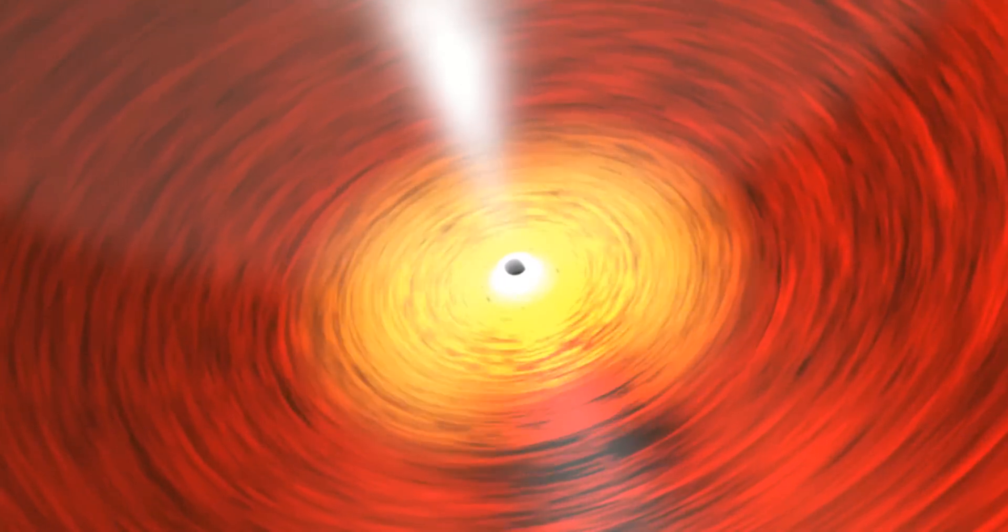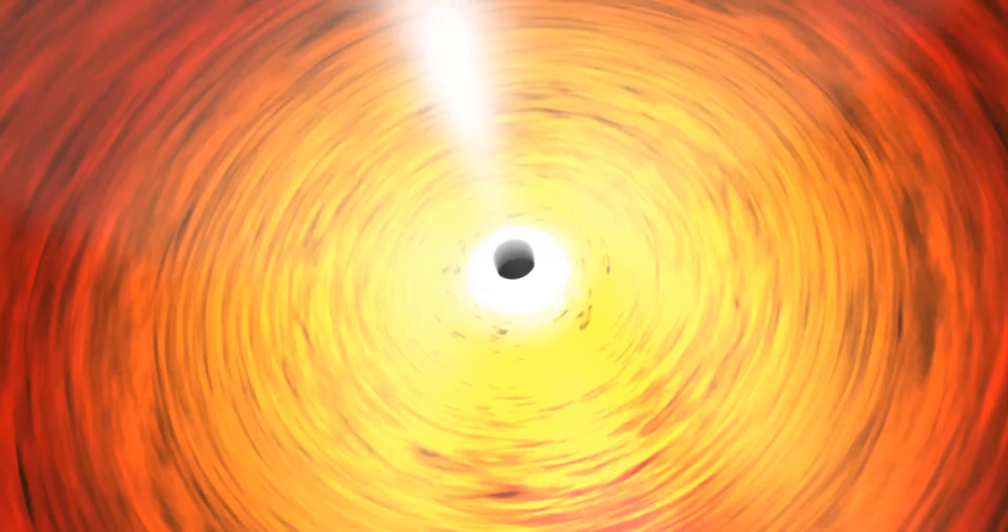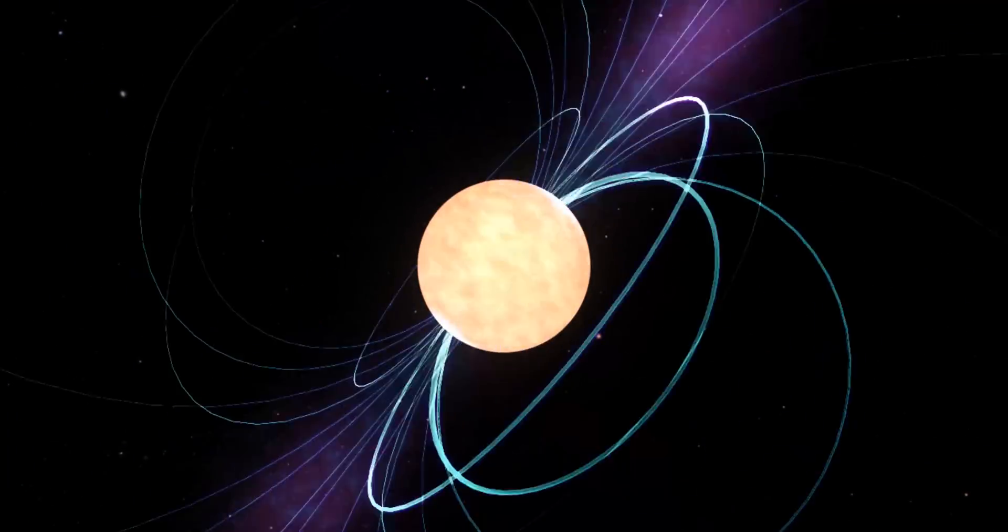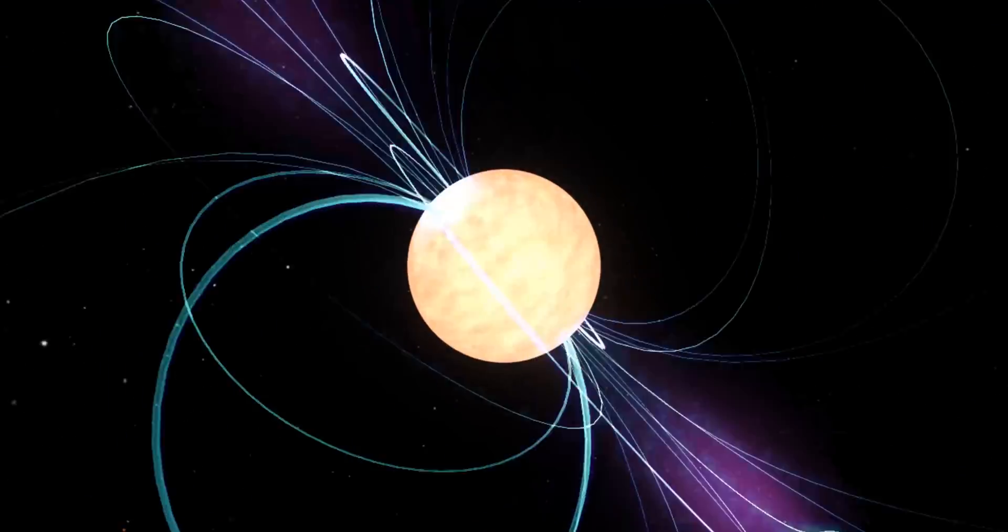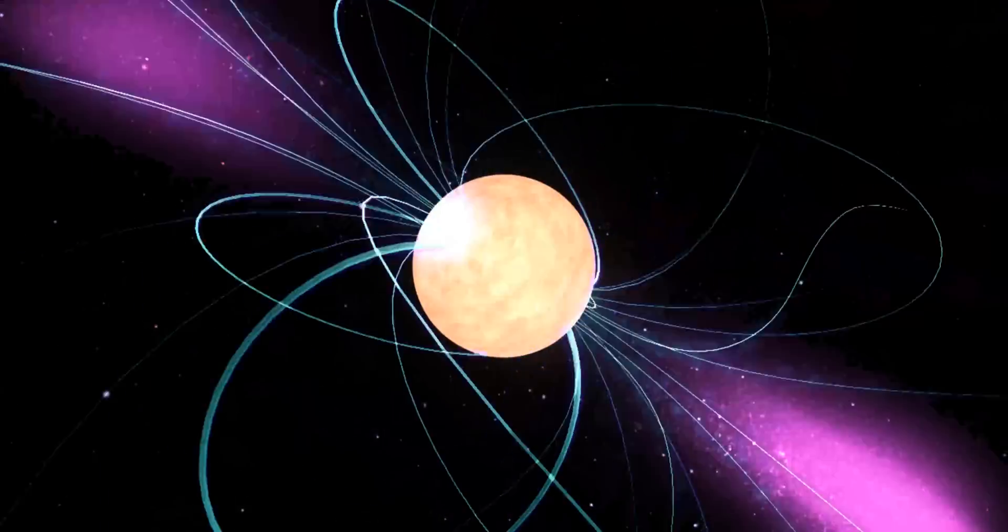Elsewhere in space, astronomers have found objects that rotate at a dizzying speed. For example, the dense cores left behind after stars explode, known as neutron stars, can rotate at remarkable rates.